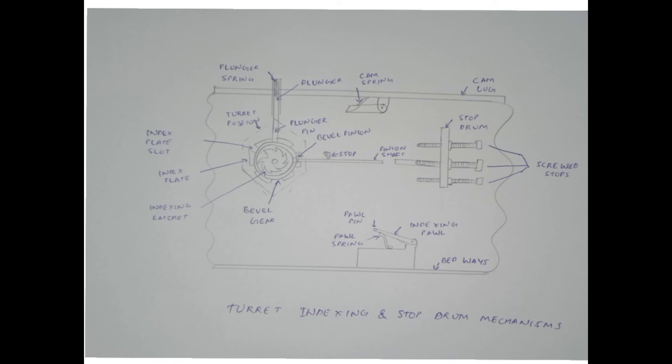The plunger cam actuates this plunger. The turret saddle is provided with an extension at its rear to accommodate the plunger and plunger spring. Opposite to the plunger, inside the bed is provided an indexing pole which carries a pole pin to engage the indexing ratchet.